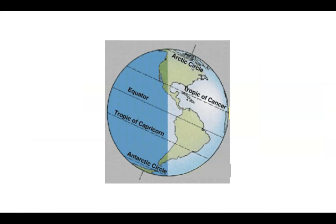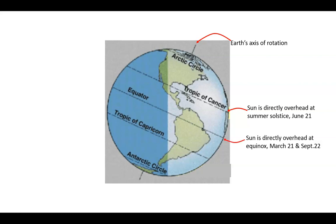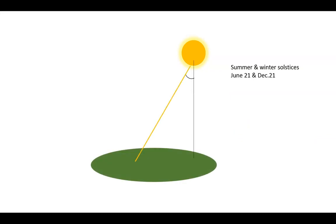I need to first briefly review zones, solstices and equinoxes. Earth is divided into well-known zones: the Tropic of Cancer, the equator, the Tropic of Capricorn and the Arctic and Antarctic circles. The axis of Earth's rotation is shown by this line. At the Tropic of Cancer, the Sun is directly overhead only once a year during the summer solstice June 21st. At the equator, the Sun is directly overhead twice at the spring and autumn equinoxes March 21st and September 22nd. At the Tropic of Capricorn, the Sun is directly overhead only once a year on the winter solstice December 21st.